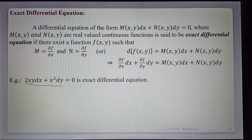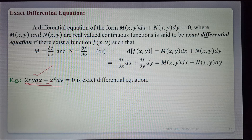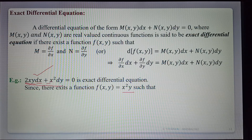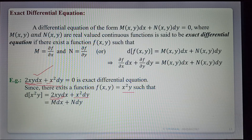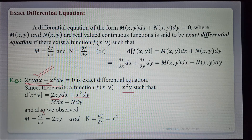For example, 2xy dx plus x² dy equals 0. This is of the form M dx plus N dy. We find a function f(x,y) such that ∂f/∂x equals M. Choose f(x,y) equals x²y. Then ∂f/∂x equals 2xy, where y is constant, and d(x²y) equals 2xy dx plus x² dy. So M equals 2xy equals ∂f/∂x, and N equals x² equals ∂f/∂y.